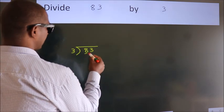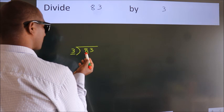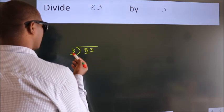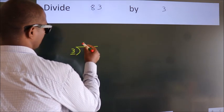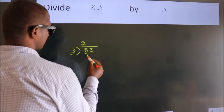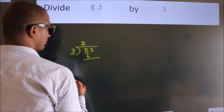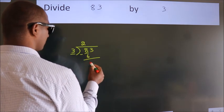Here we have 8, here 3. A number close to 8 in the 3 table is 3 times 2 equals 6. Now we should subtract, we get 2.